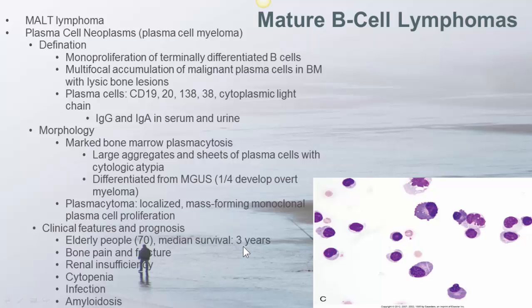Clinically, patients present with bone pain and pathological fractures because of the lytic lesions in the bones. Renal insufficiency is caused by obstruction or direct damage by the monoclonal protein. Cytopenia is due to replacement of normal lineage cells by massive plasma cell infiltrates. Infection is due to decreased levels of normal immunoglobulins. The clonal immunoglobulins deposit at different organs to form amyloidosis.